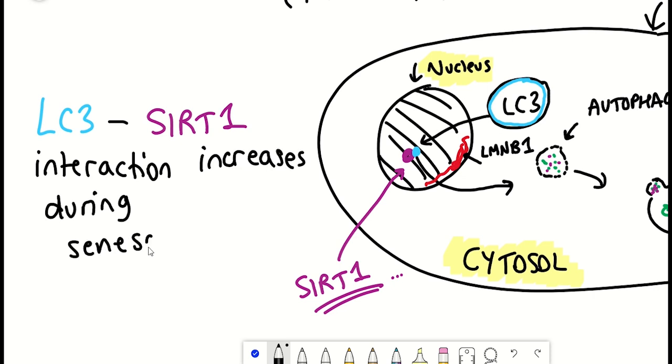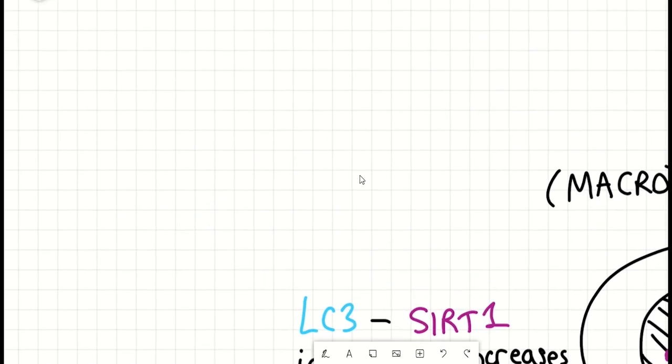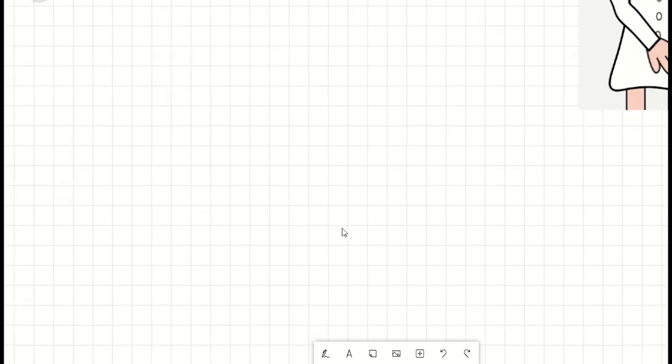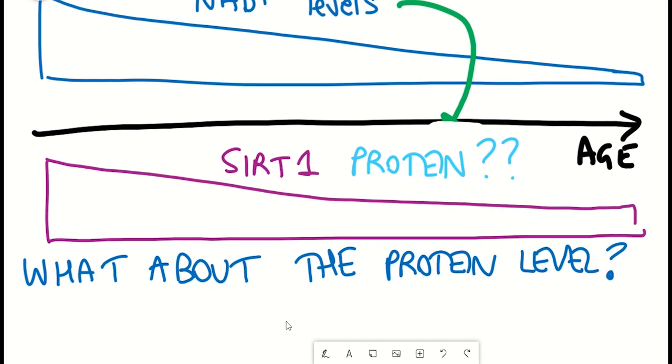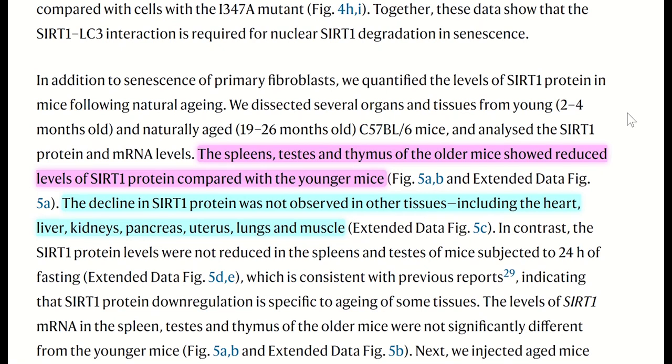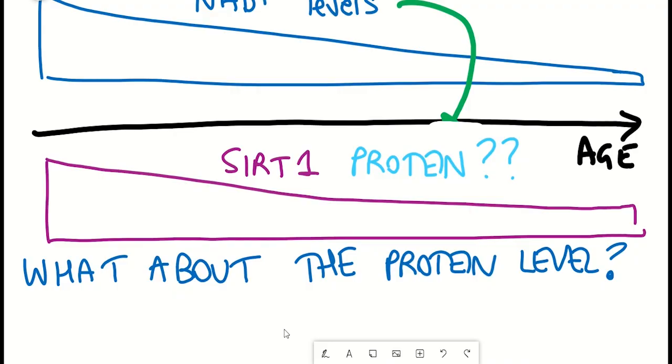But besides looking at senescence, the authors also looked at SIRT1 protein levels during aging. The way they did this was by dissecting different organs and tissues from young and naturally aged mice. What they saw was that the spleens, testes, and thymus of the older mice showed reduced levels of SIRT1 protein compared with the younger mice. But it was interesting to note that SIRT1 protein decline wasn't observed in all tissues. For example, the heart, liver, kidneys, pancreas, uterus, lungs, and muscle didn't show a decline.